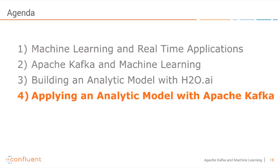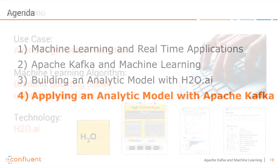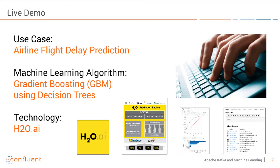Let's now come to building the models. Here we will do a live demo. The use case is airline flight delay prediction: we have a historical data set of flights from the last 20 years and we want to use that to predict on new flights whether a flight is probably delayed. As the machine learning algorithm we use a Gradient Boosting Machine using decision trees. In a similar way you can use many other algorithms like logistic regression, deep learning, or autoencoders.